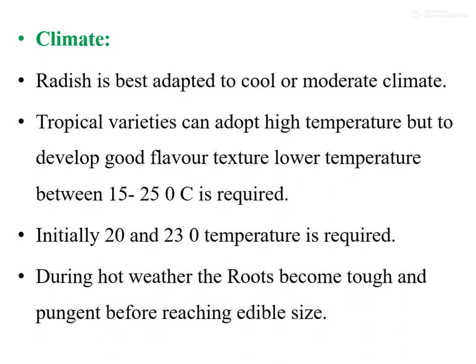At the initial stage of radish, it requires 20 to 23 degrees Celsius temperature for germination. During hot weather, the roots become rough and pungent before reaching edible size. If the temperature increases during the growing period, the roots become pungent and tough, which is not good for consumption.